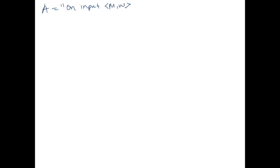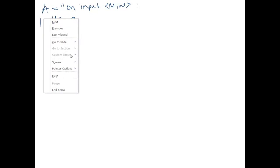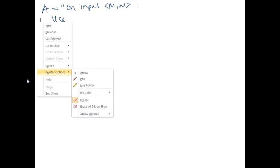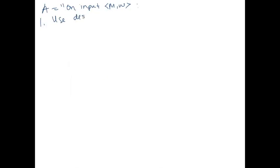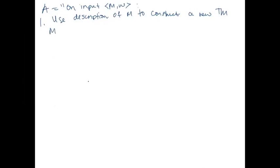The reduction A operates on input M, W — where M is the machine we're asking about: does M accept W? Step one is to use the description of M to construct a new Turing machine M1. Let me describe what M1 does first, and then we'll get back to the proof.